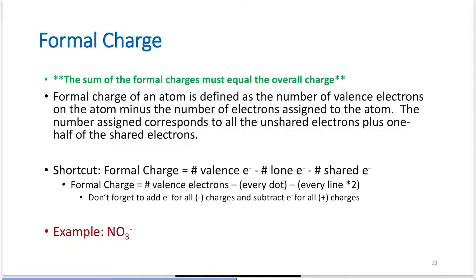The shortcut: to find formal charge, take the number of valence electrons, subtract the number of lone electrons, and subtract the number of shared electrons. Or number of valence electrons minus every dot minus every line times 2. Don't forget to add electrons for all the negative charges and subtract for all the positive charges we have.